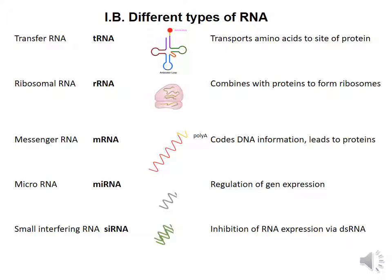What we have just seen is the production of messenger RNA, or mRNA, which codes DNA information and leads to proteins. This is the type of RNA that we are going to be working with when measuring gene expression and transcription.